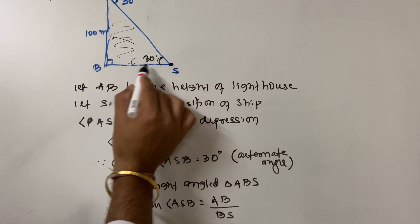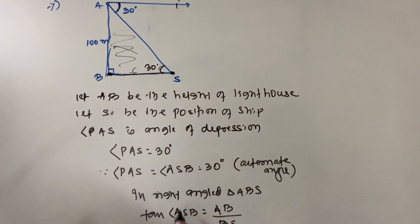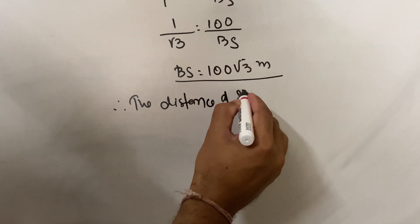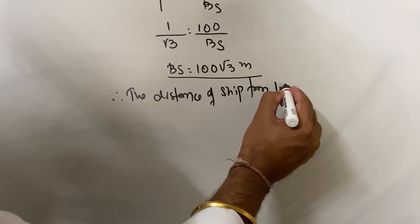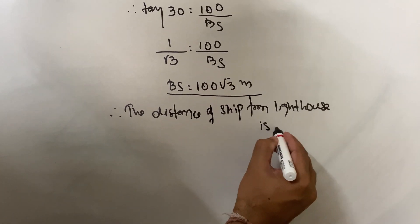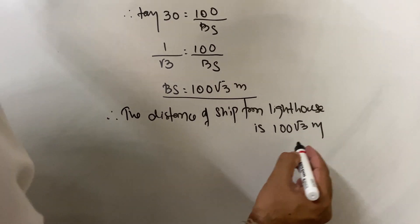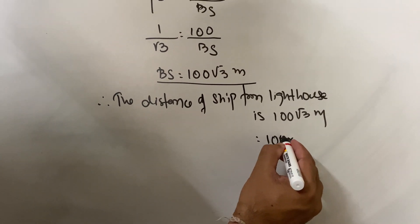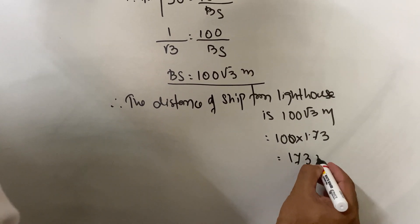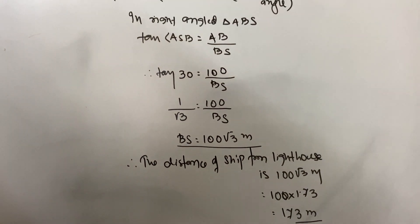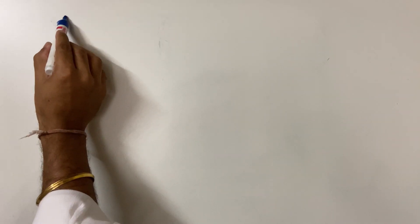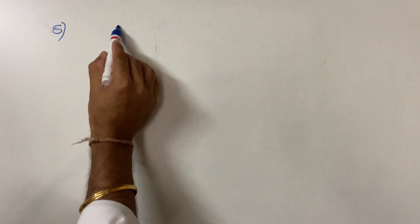Therefore, the distance of the ship from the lighthouse is 100 root 3 meters. If you want, you can also write 100 into root 3, where root 3 is approximately 1.73, giving 173 meters. This is how you do sum number seven. Now sum number eight.